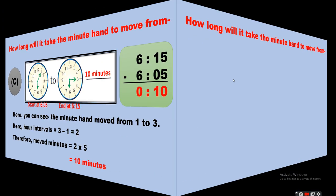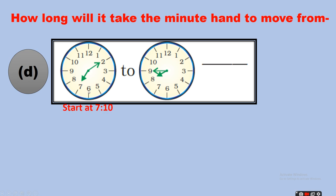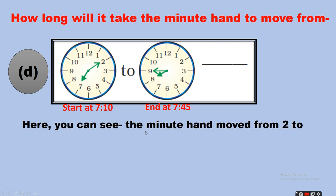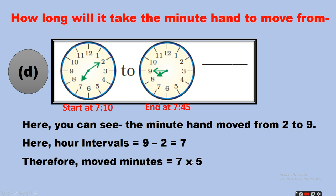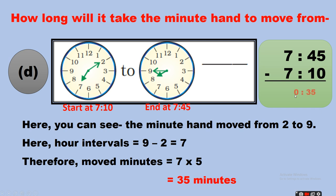Question D: starting time 7:10, ending time 7:45. The minute hand moved from 2 to 9. The number of intervals is 9 minus 2, which equals 7. Therefore, the minutes moved equals 7 multiplied by 5 — seven fives are 35. Another method: ending time 7:45 minus starting time 7:10 equals 35 minutes. So the answer is 35 minutes.